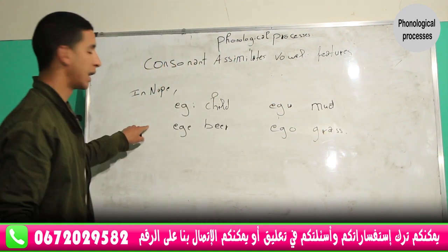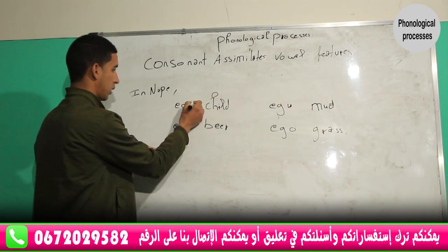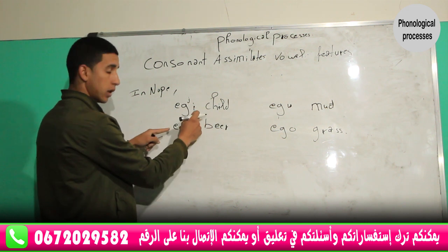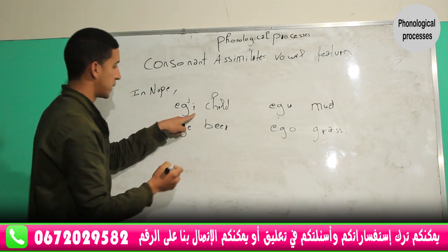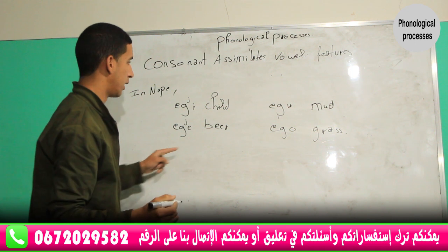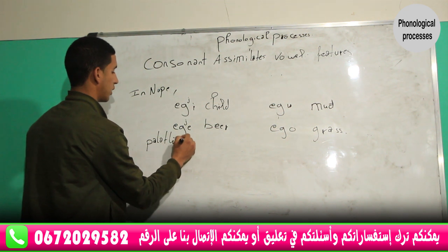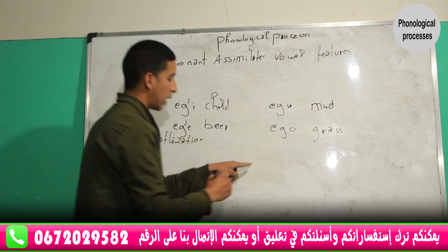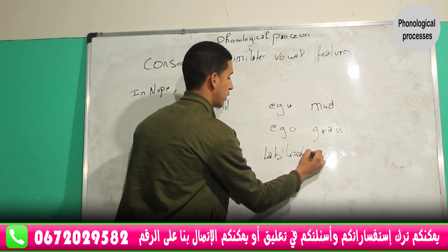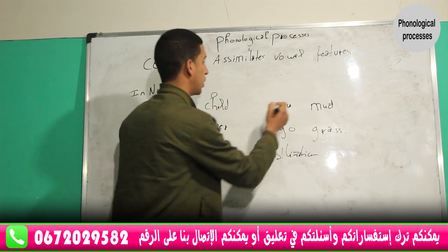The rule says a consonant preceding a front vowel will be palatalized. This is a front vowel, and this is also a front vowel — it will be palatalized. And when a consonant precedes a round vowel, it will be labialized.